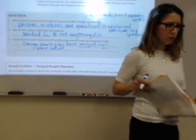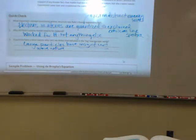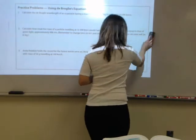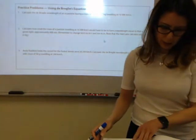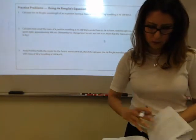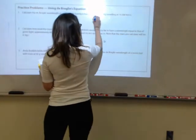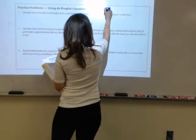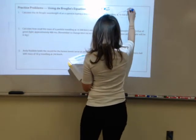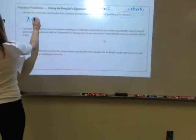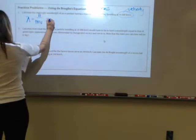Now, we can use de Broglie's equation to calculate wavelengths or mass, whatever variable it is that we are looking for. Let's take a look at number one. It says, calculate the de Broglie wavelength of an alpha particle having a mass of 6.64 times 10 to the negative 27 kilograms traveling at 16,000 kilometers per second. If we want to calculate the wavelength, wavelength equals Planck's constant divided by mass times velocity.